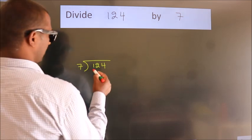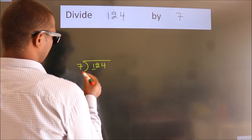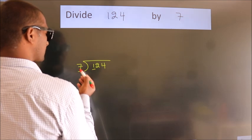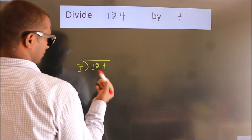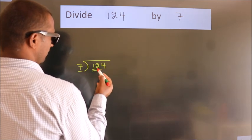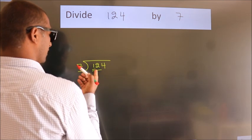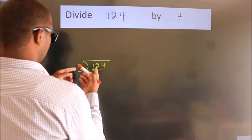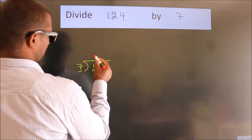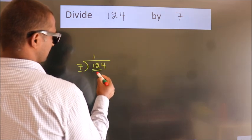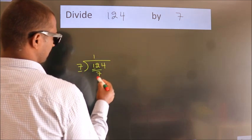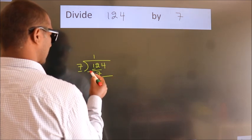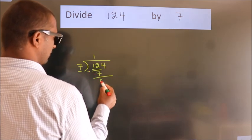Here we have 1, and here 7. Since 1 is smaller than 7, we should take two numbers: 12. A number close to 12 in the 7 times table is 7 once, which is 7. Now we subtract and we get 5.